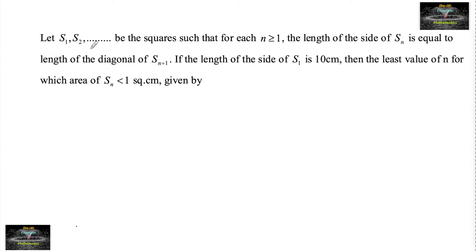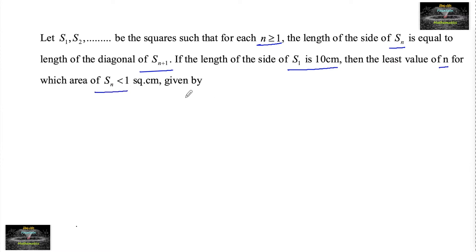Let s1, s2, and so on be the squares such that for each n greater than or equal to 1, the length of the side sn is equal to the length of the diagonal of s(n+1). If the length of the side s1 is 10 cm, then find the least value of n for which the area of sn is less than 1 square cm.